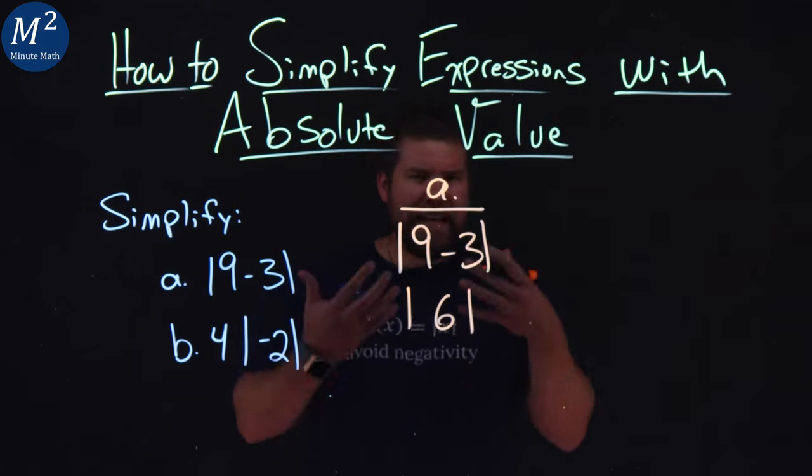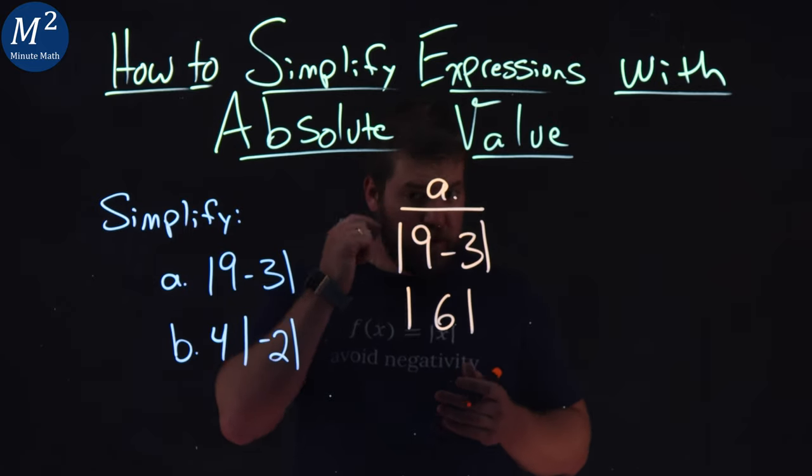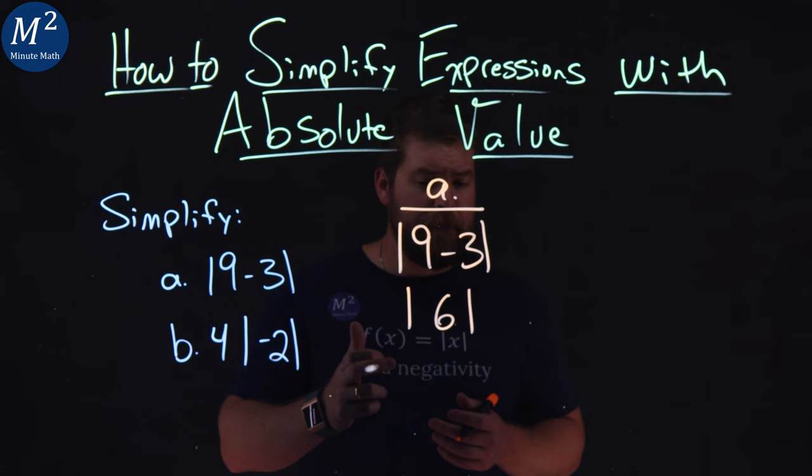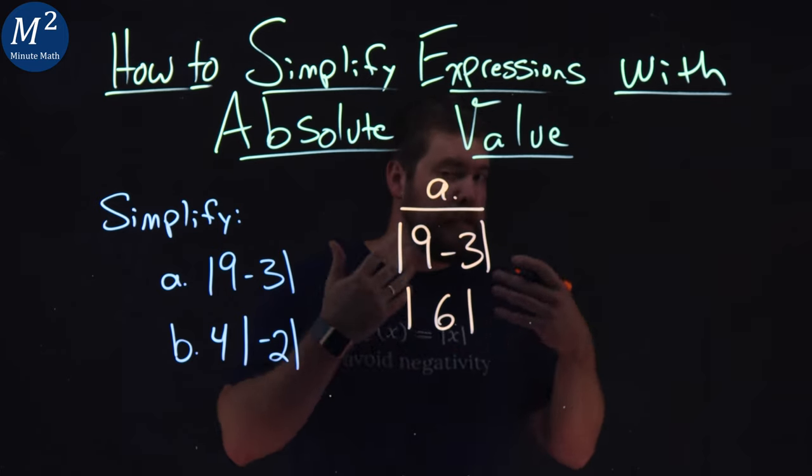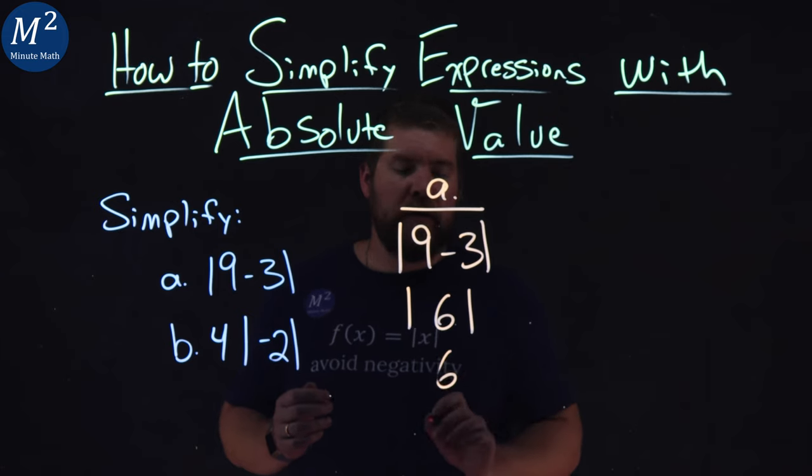Now we need to take the absolute value of 6. Let's follow the order of operations, right? We're going step down, step down, take our time. Absolute value of 6, the distance that 6 is from 0 is 6, and so our answer here is just 6.